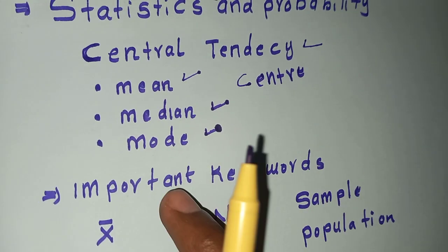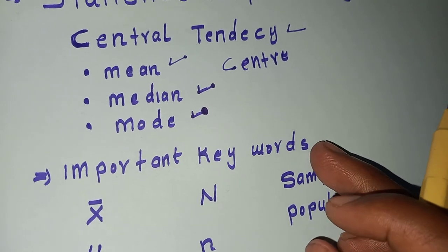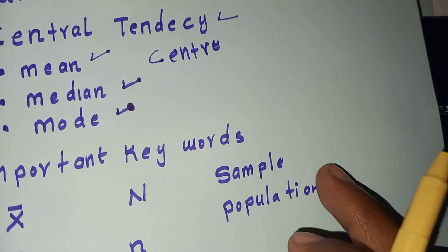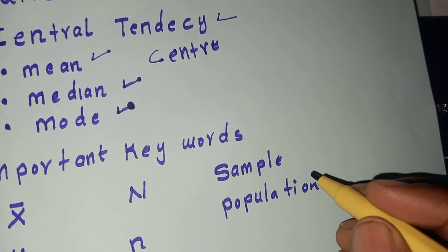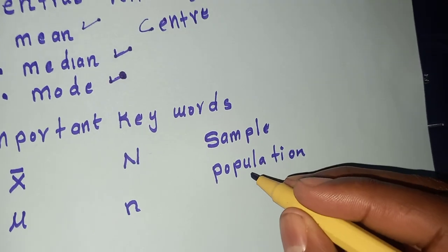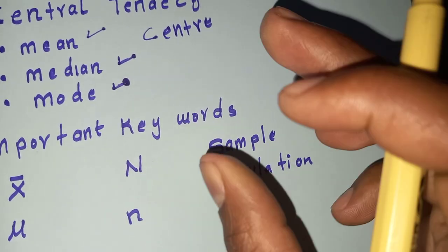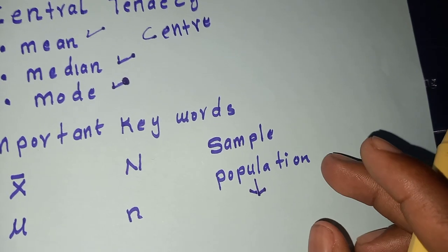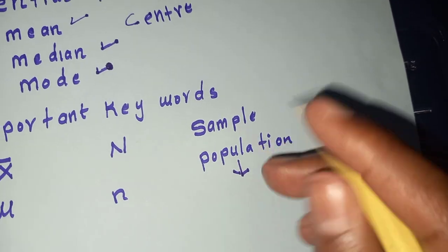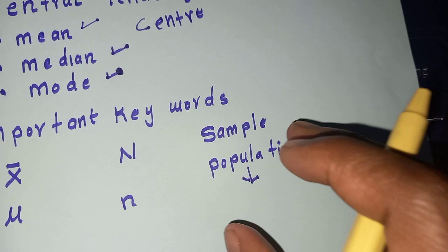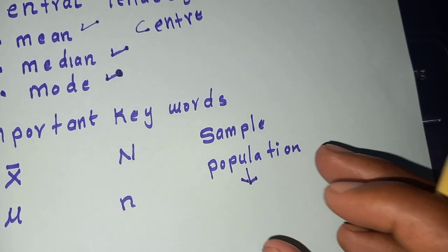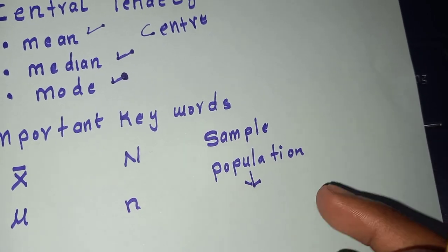We have to understand these important keywords. When we talk about sample and population, I think all of you know the difference. When we need to do some target value, that's called population. I mean that all the entire objects of any interesting object is called population.